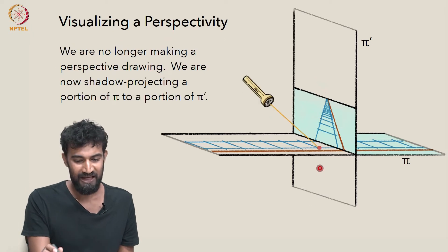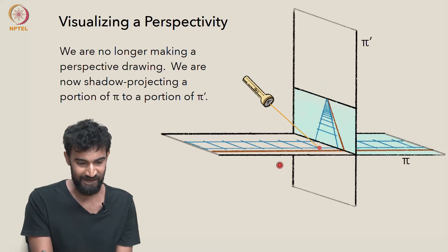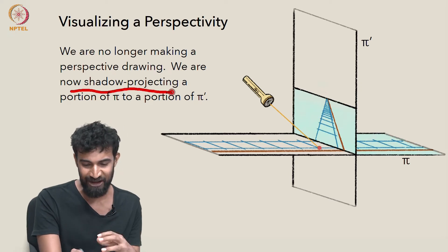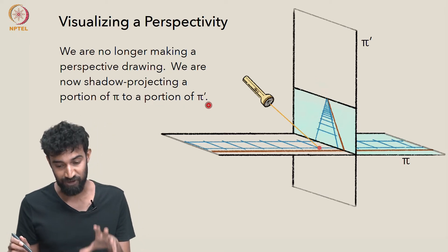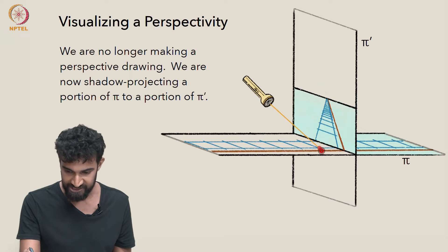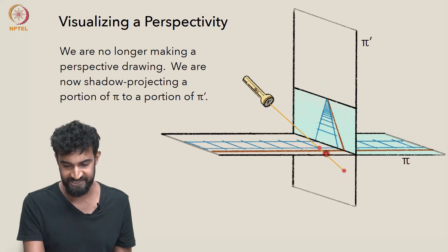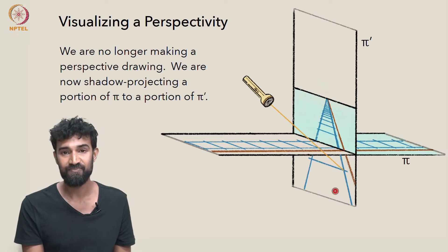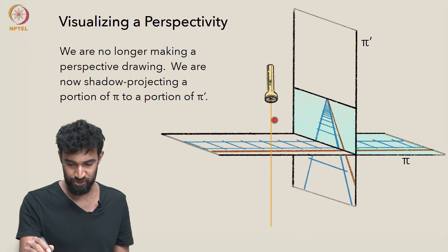So let's try exploring what the perspectivity does further down. But we're not drawing anymore, we're not doing a perspective drawing. We're now doing kind of a shadow projection of a different portion of pi to a different portion of pi prime. So now this point here is going to get projected, this is a point from pi, but it's going to get projected to this point here in pi prime. And similarly, we can keep projecting all these points, and we'll extend the image of the railway tracks further down that way, through that projection. We can keep going further down, we can keep projecting, doing this shadow projection, but once again, we're going to reach a limit of that interpretation.